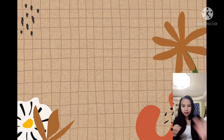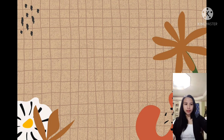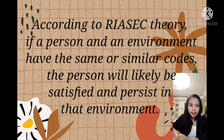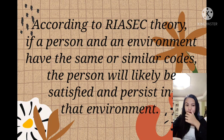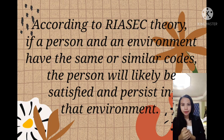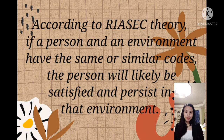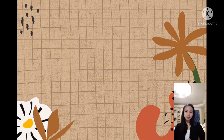Those are the types of attitude according to John Holland. According to his RIASEC theory, if a person and an environment have the same or similar codes — like investigative people working in an investigative environment — then most likely the work performance of the person is better. I can say that John Holland's theory is very helpful in identifying what career path a person like myself would want to pursue. That's all. Thank you for listening to my video discussion.